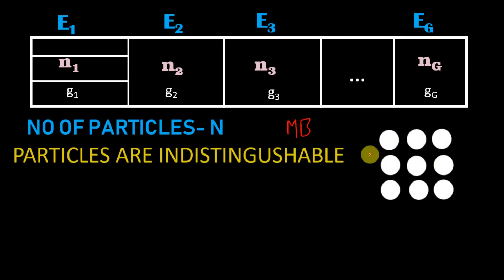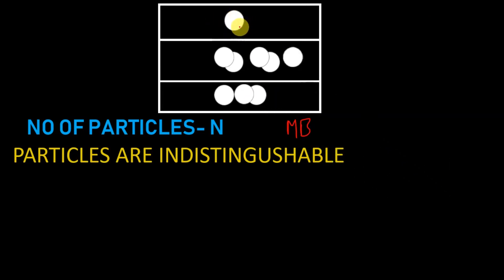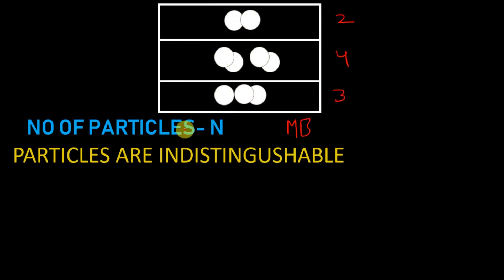Let us take an indistinguishable particle. Here we don't need to track where each particle went. In Maxwell-Boltzmann statistics we needed to do that — that is what Maxwell-Boltzmann statistics deals with: distinguishable particles. But here we are in quantum statistics. We don't need to care much about individual particles; we need to care more about energy levels. What we need to know is how many particles are there in which energy level. Swapping particles won't change the microstate because they are indistinguishable, making our task easier than Maxwell-Boltzmann statistics.